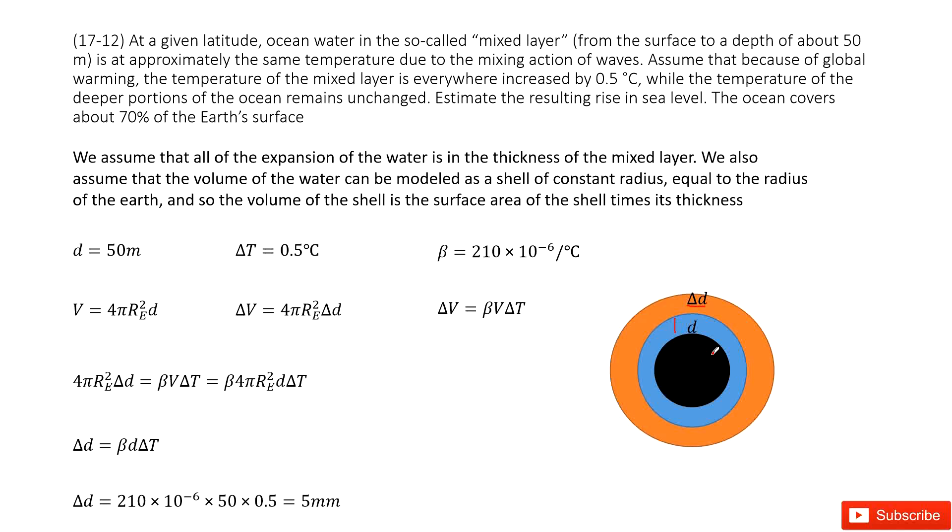First, let's see what is given. Quantity given: d is 50 meters, and the temperature change is 0.5 degrees. And also we can check our textbook to get the coefficient for thermal expansion for water, β, for this number.